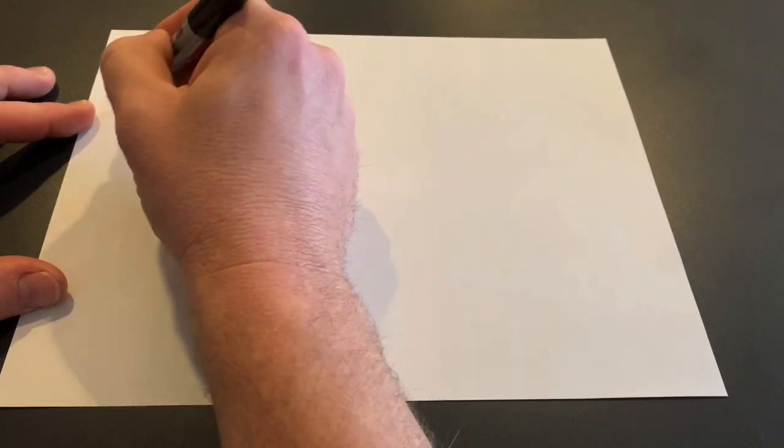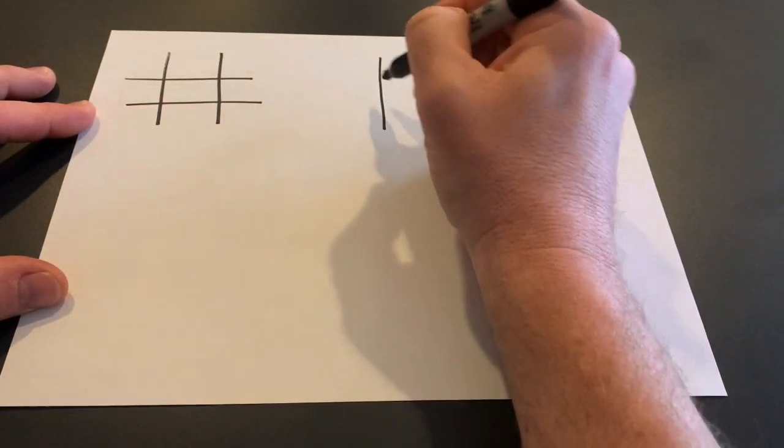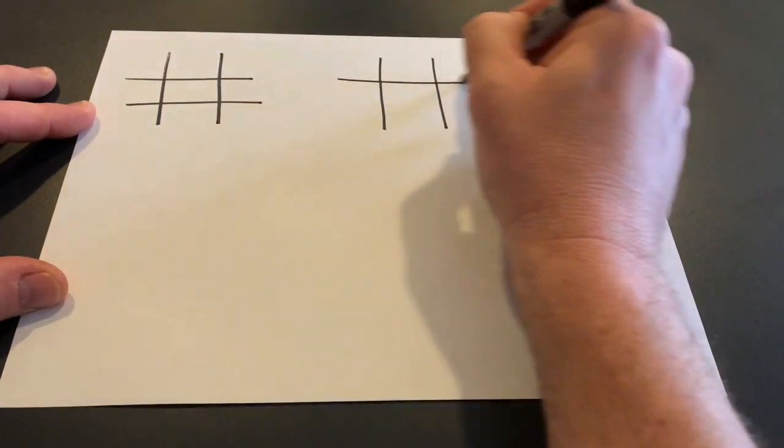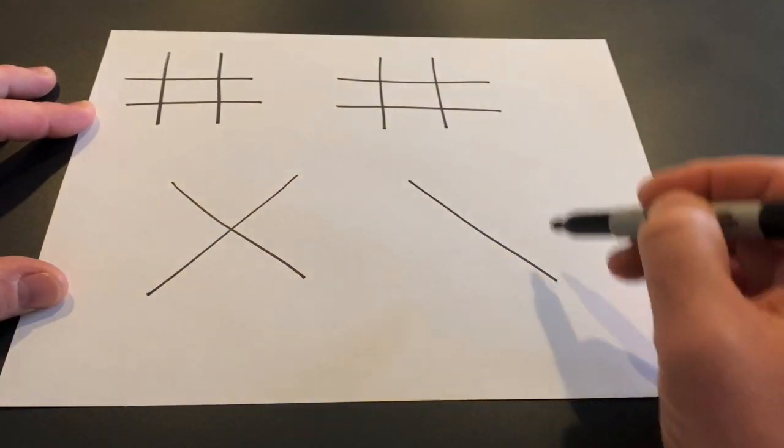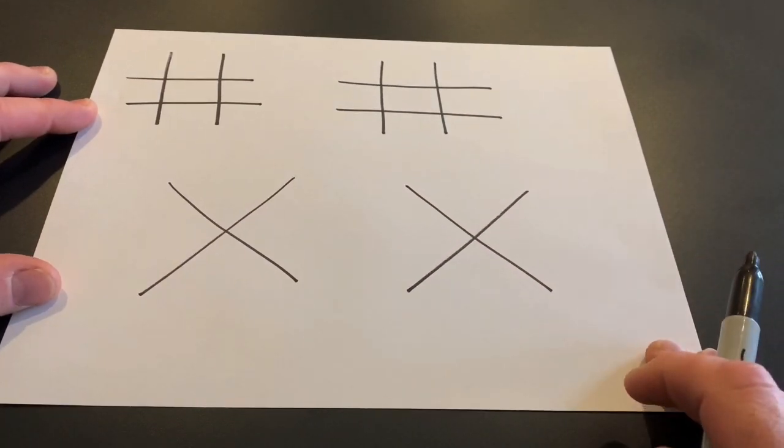So this is the pig pen cipher. Grab a pencil or a permanent marker, whatever you have, and you start to make a grid like this on paper. So this is the cipher, this is how you would break the code that you put together for your friend.